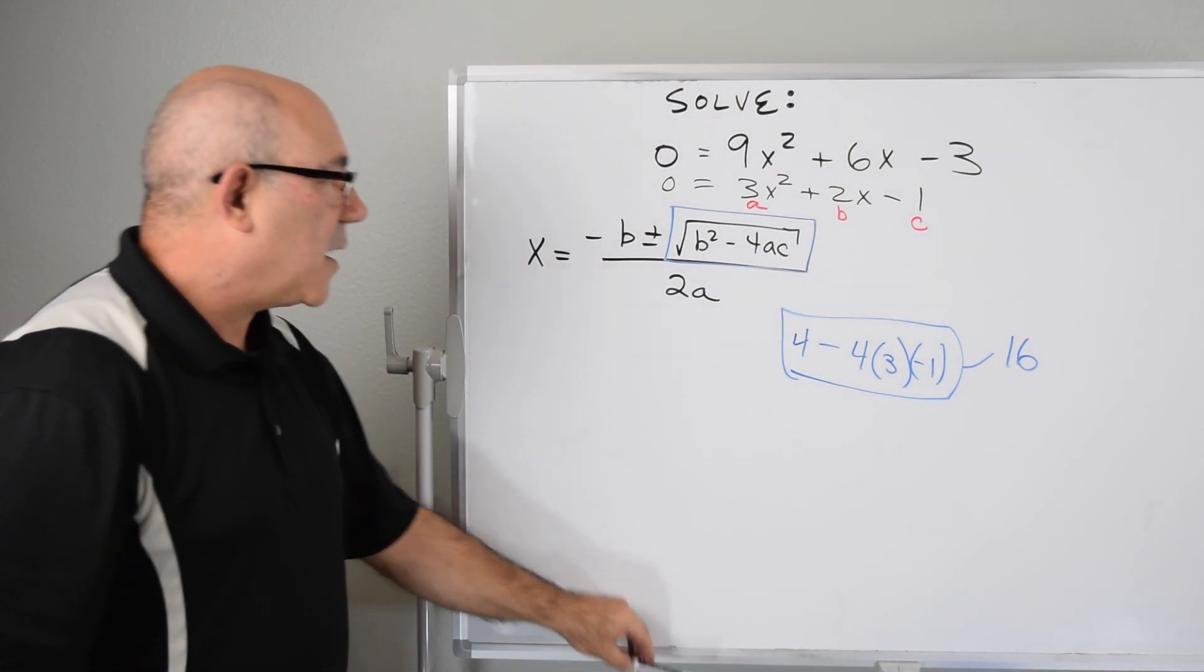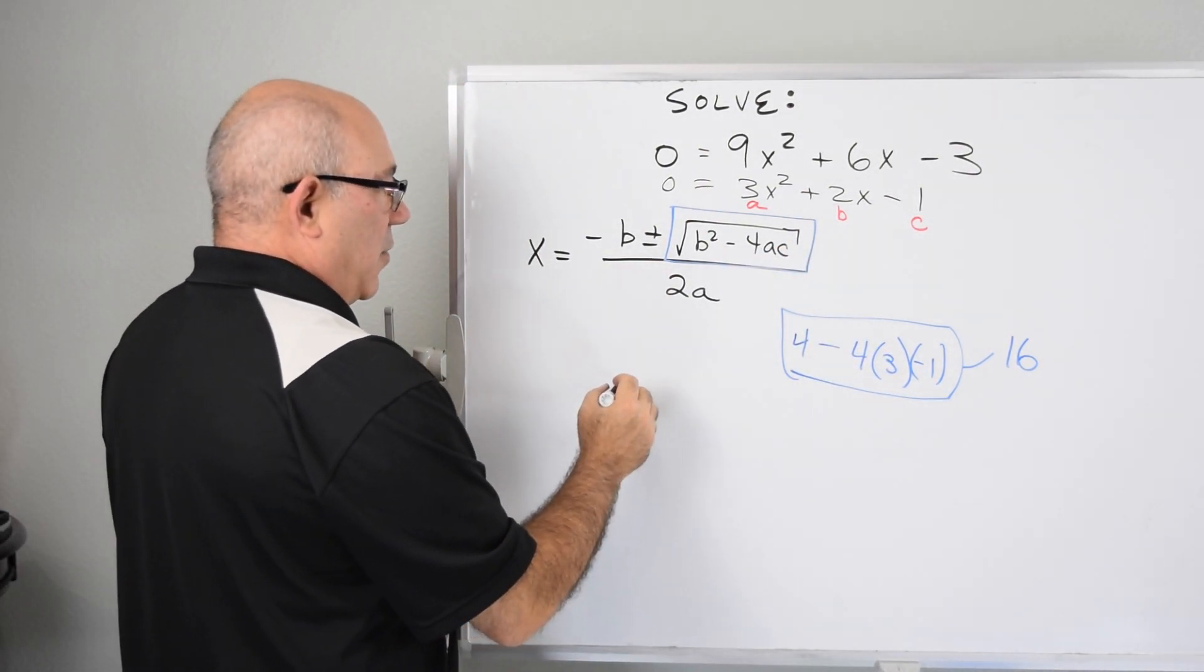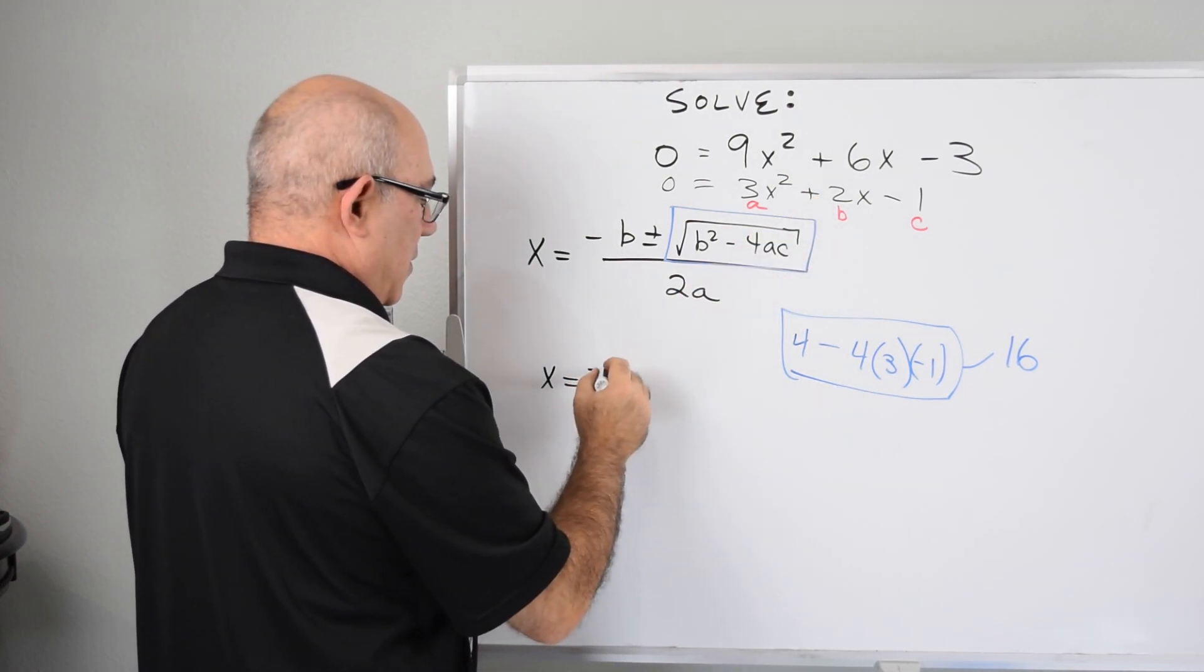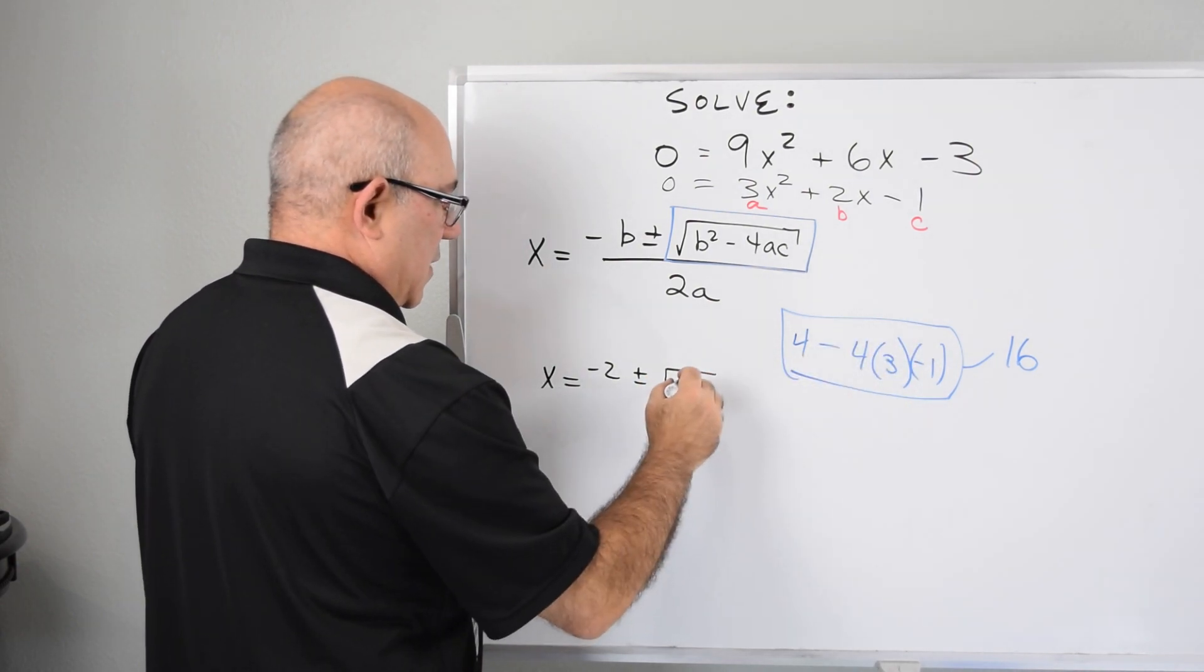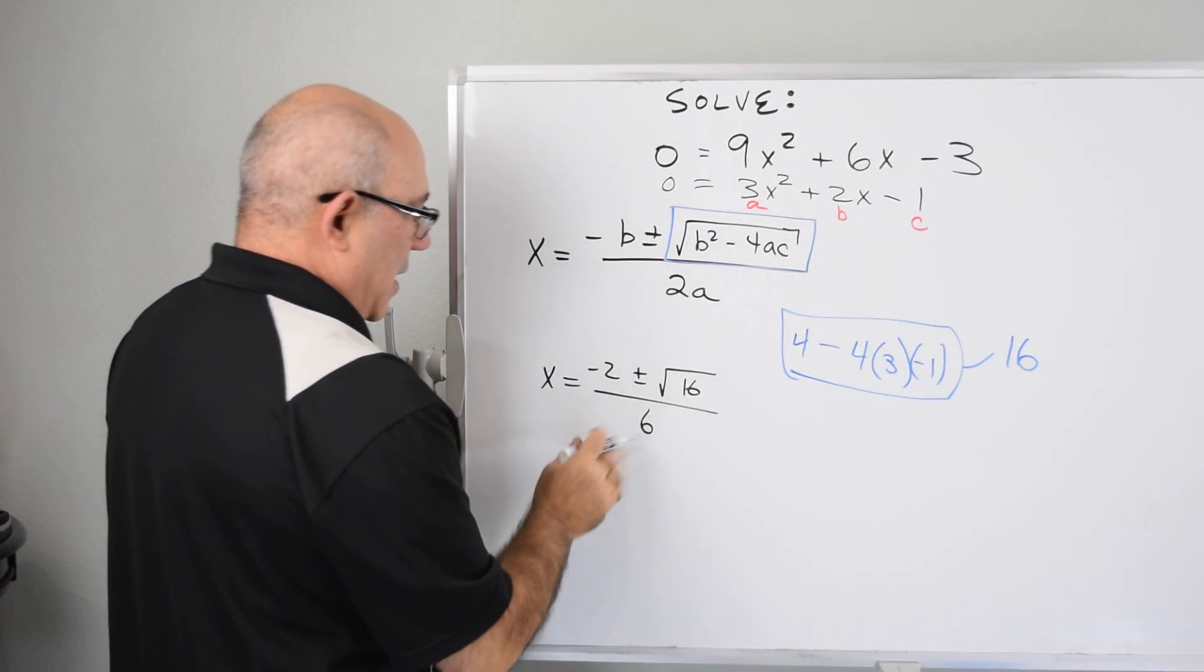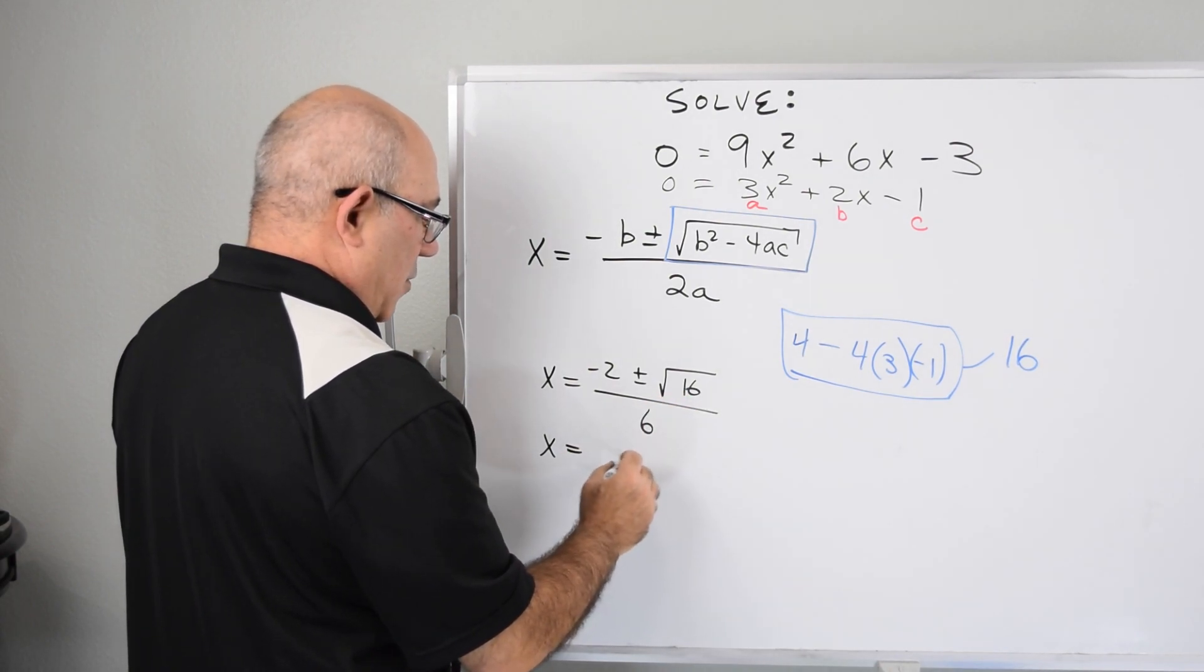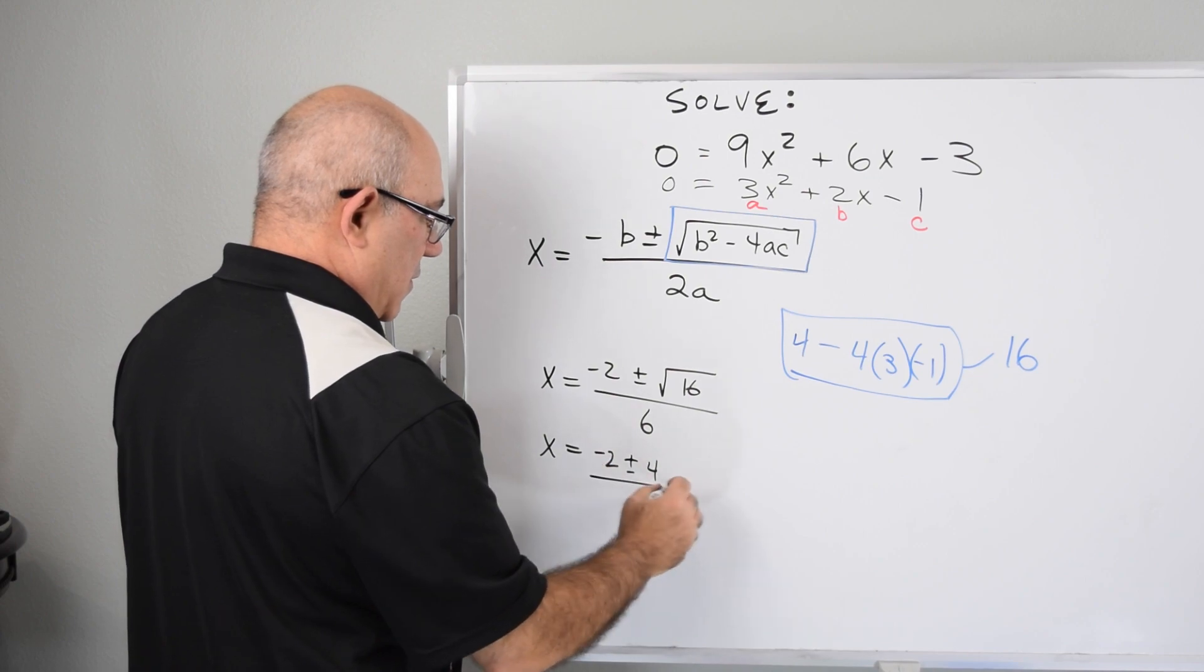So now let's solve the equation. We already know this piece. So we will substitute. We will say x equals minus b, which is minus 2, plus or minus the square root of 16, all over 6, which is 2 times 3. So now we can simplify that sum. This will be plus or minus 4. This will be minus 2. And this will be 6.